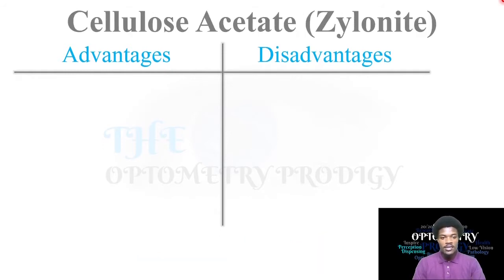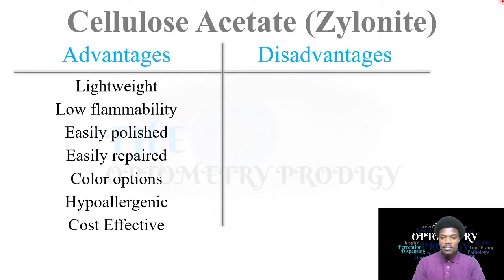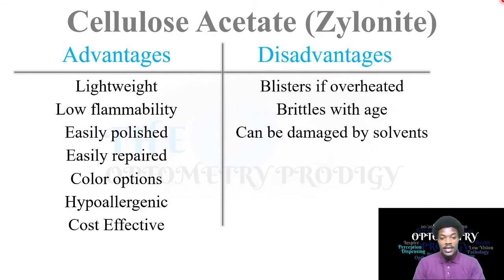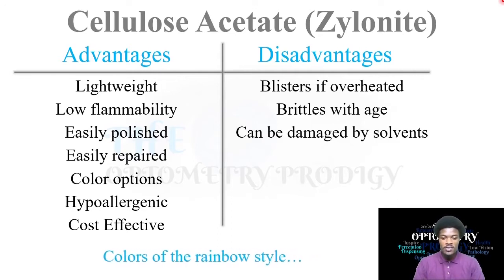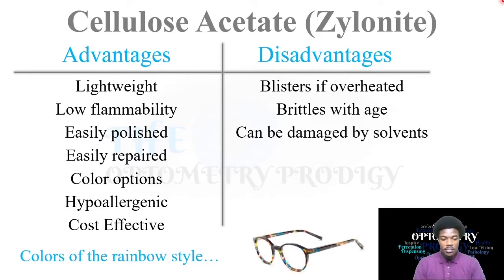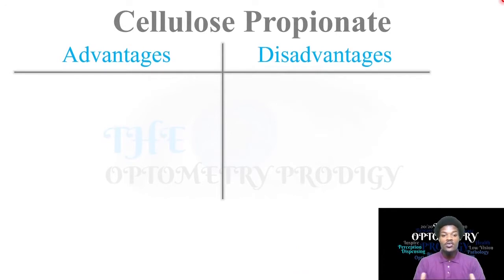Now cellulose acetate — also known by the brand name Xylonite. The advantages are: it is lightweight, low flammability, easily polished, easily repaired, has a lot of color options, is hypoallergenic, and cost effective in production. The disadvantages are: it will blister when overheated, it brittles with age, and can be damaged by solvents and chemicals. The tip here is that you can get a rainbow style with the colors — those into the cosmetic aspect will love the wide color variation available.